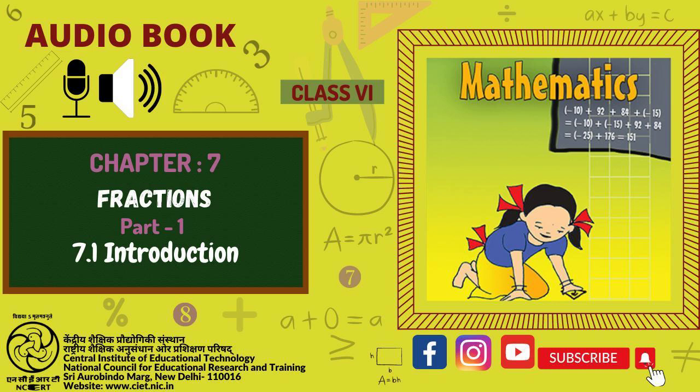2. A fraction is given. How will you decide, by just looking at it, whether the fraction is A less than 1, B equal to 1? 3. Fill up using one of these: Greater than, less than, or equal to. A. Half dash 1. B. Three-fifth dash 1. C. 1 dash 7 eighth. D. 4 upon 4 dash 1. E. 2005 upon 2005 dash 1.